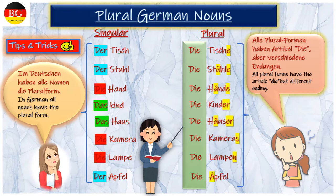All plural forms have the article die, but different endings. In this video, we will see the different patterns of plural form in German with lots of tips and tricks. So do watch this video till the end.